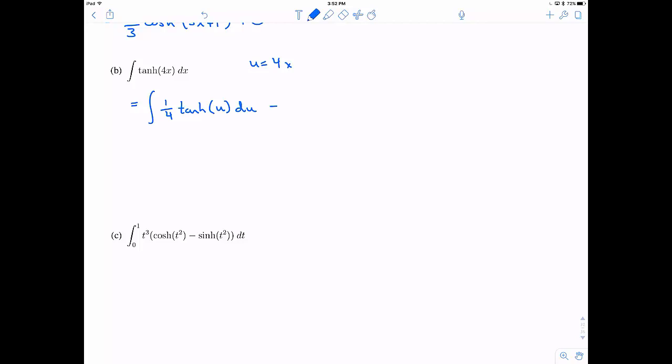So this is going to be 1 fourth hyperbolic tangent of u du. Alright. Just going a little bit fast there. And the idea is how do I integrate hyperbolic tangent? Well, a good idea is to split this up and to actually use a u substitution again. So in fact, I'm going to use v since I already used u.